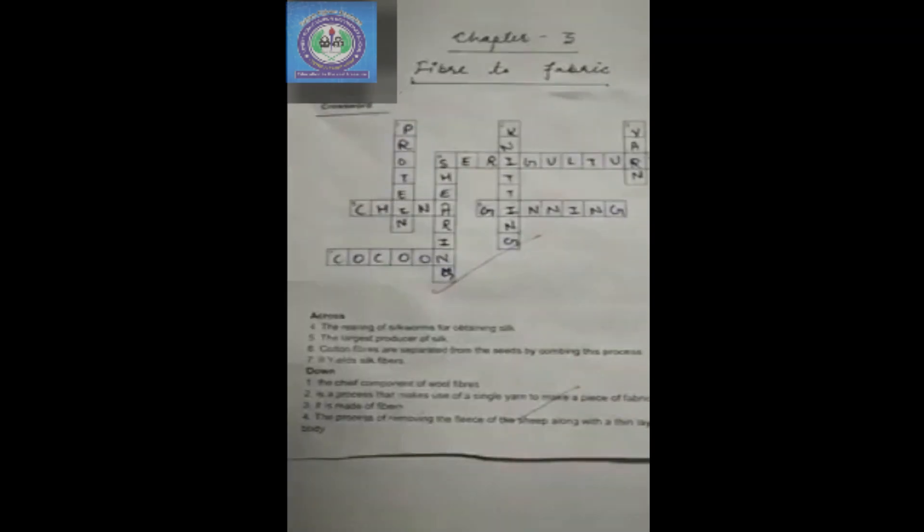The next is the largest producer of silk. China is the largest producer of silk. Cotton fibres are separated from the seeds by combing this process. This is known as ginning.